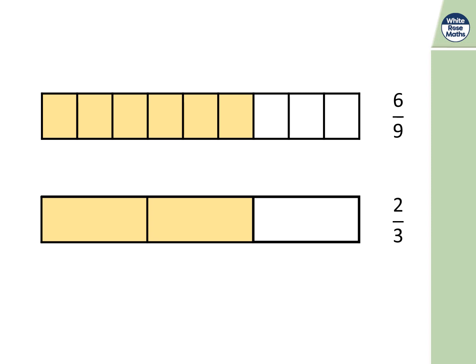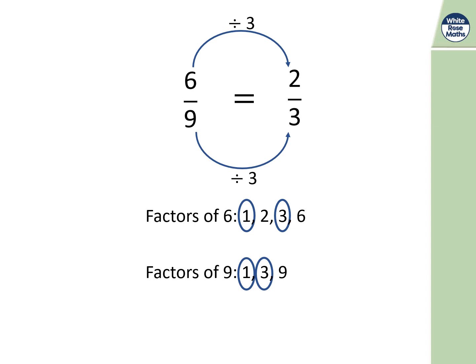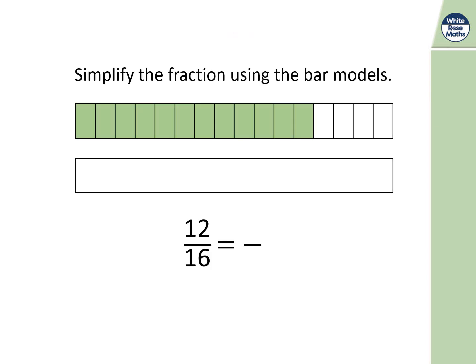For six ninths: I've divided top and bottom by three. Six divided by three is two, and nine divided by three is three. So six ninths simplifies to two thirds. To simplify a fraction, I look for the highest common factor of both numbers. Factors of six are one, two, three, and six. Factors of nine are one, three, and nine. The highest common factor is three.